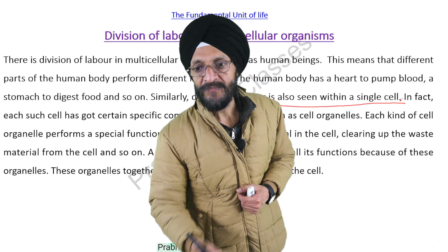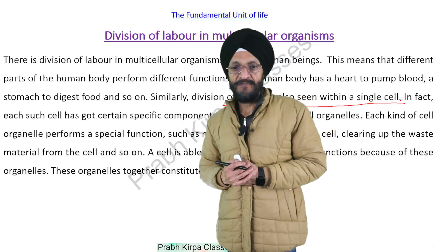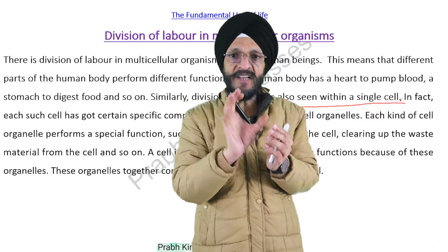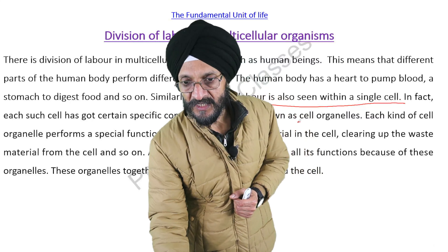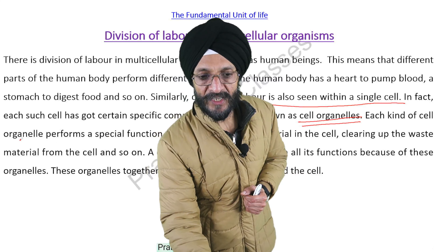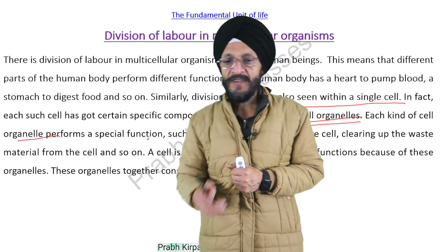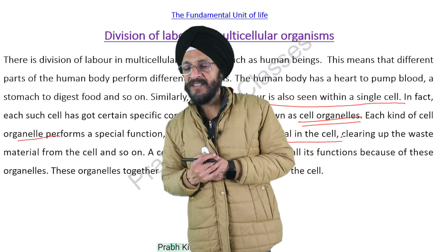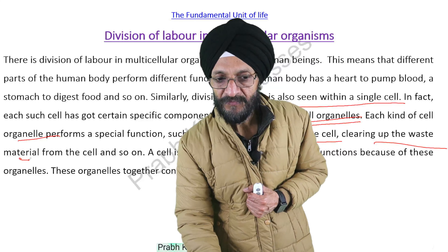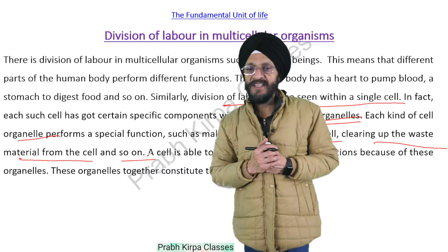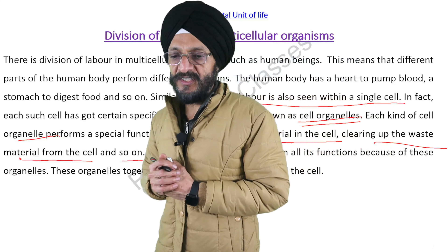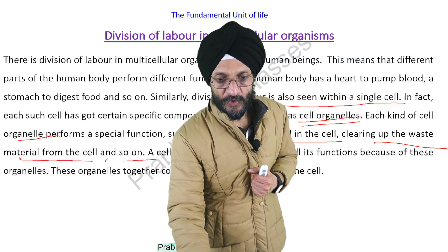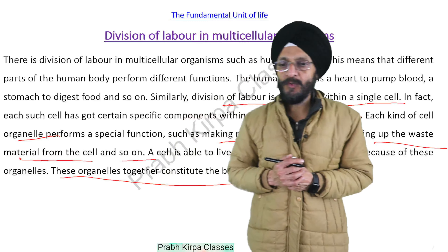Similarly, division of labour is also seen within a single cell. Each cell has certain specific components present inside it which are known as cell organelles. Each kind of cell organelle performs a specific function, which may include making new materials in the cell or clearing up waste material from the cell. A cell is able to live and perform its functions because of the cell organelles present inside it.